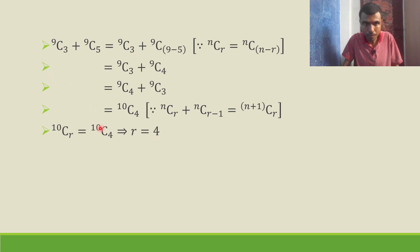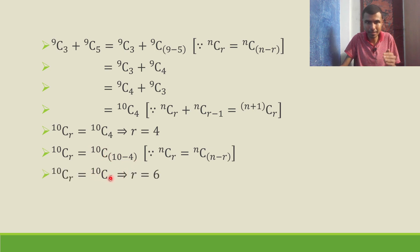Now wait, also, 10C4 can be written as 10C(10-4), same property, because nCr is nC(n-r). So 10C4 is 10C(10-4), which is 10C6. So r can be 4 or 6.